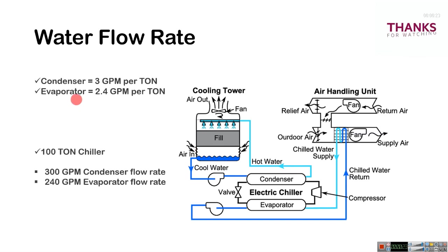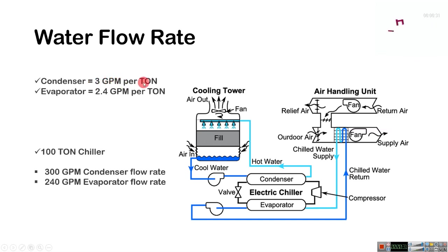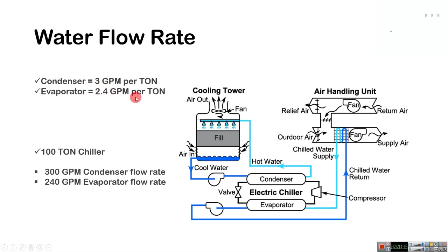Normally, condenser side we use 3 GPM (US gallons per minute) per ton, and evaporator side 2.4 US gallons per minute per ton. The condenser pipe connects to the cooling tower.